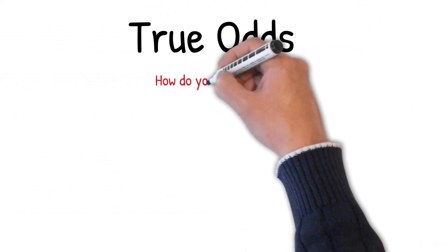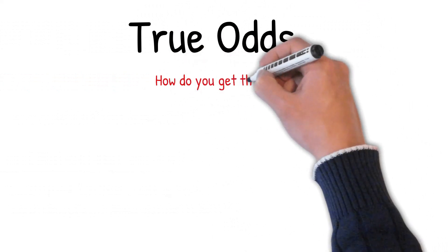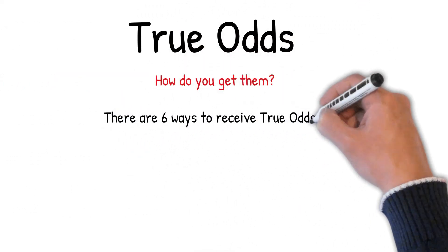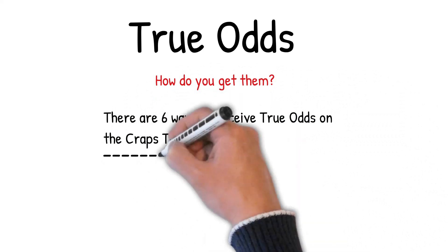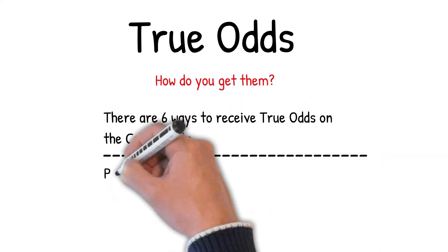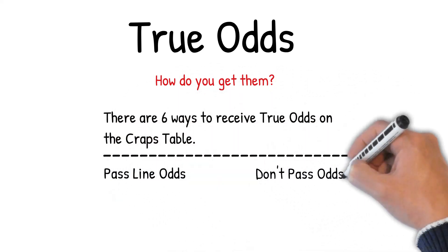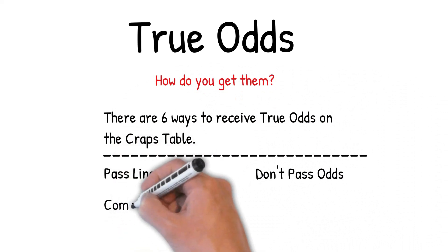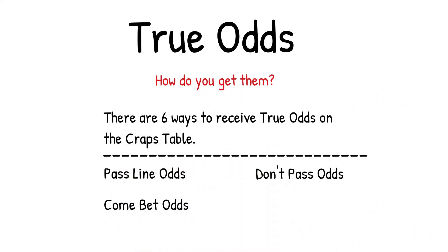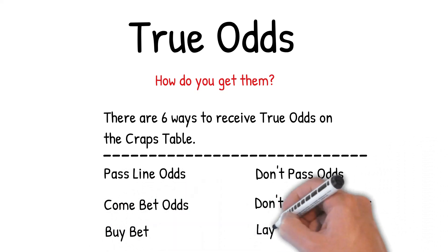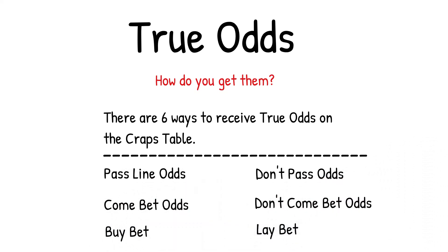How do you get true odds? There are 6 ways to receive true odds on the craps table — 3 ways betting with the shooter and 3 ways betting against the shooter. Betting with the shooter you have pass line odds, come bet odds, and the buy bet. Against the shooter you have don't pass odds, don't come bet odds, and the lay bet.